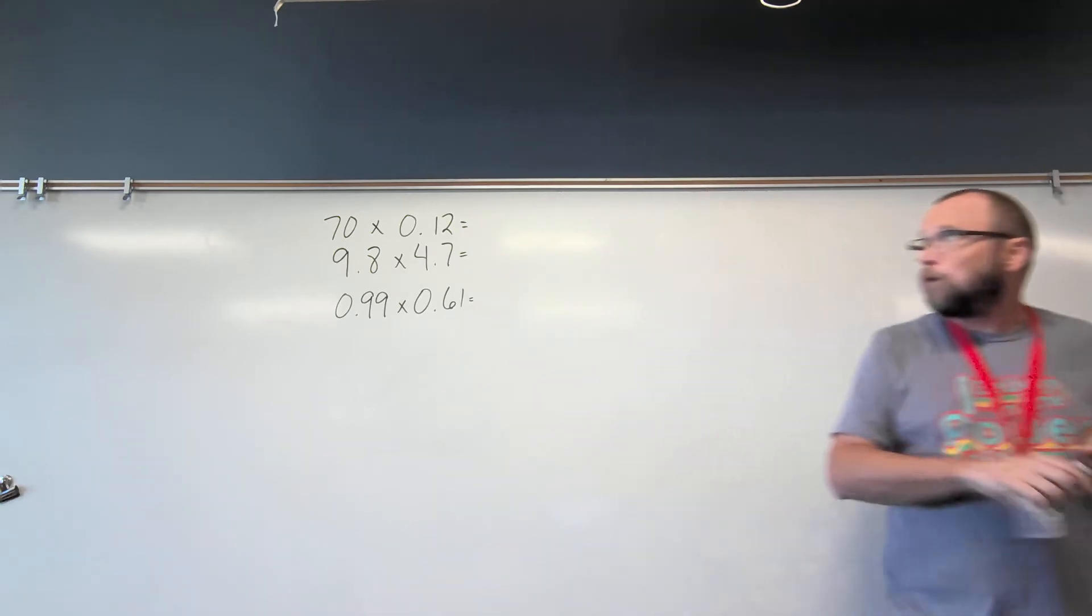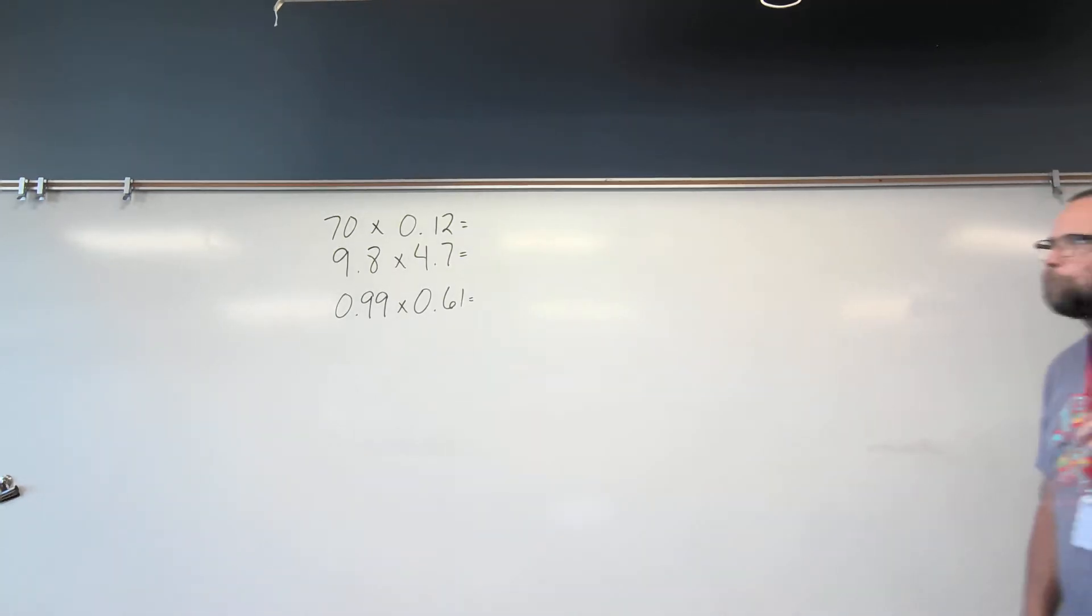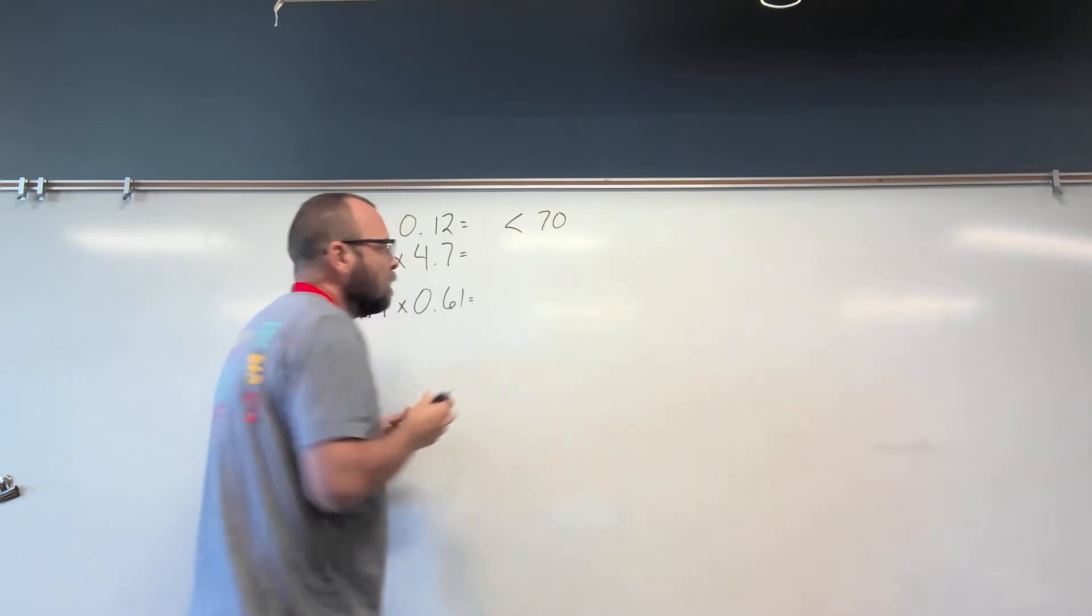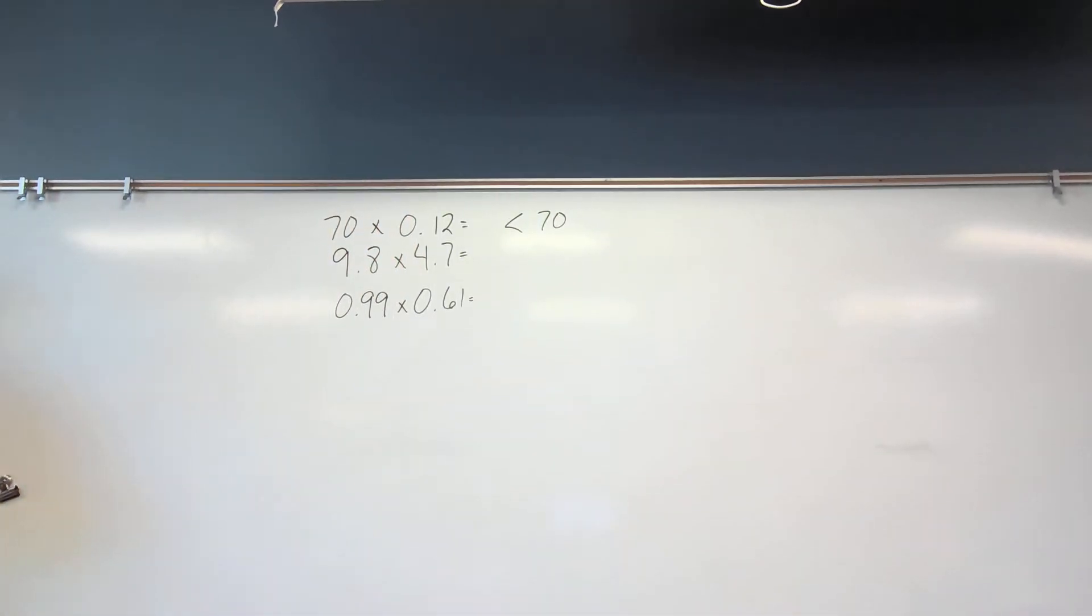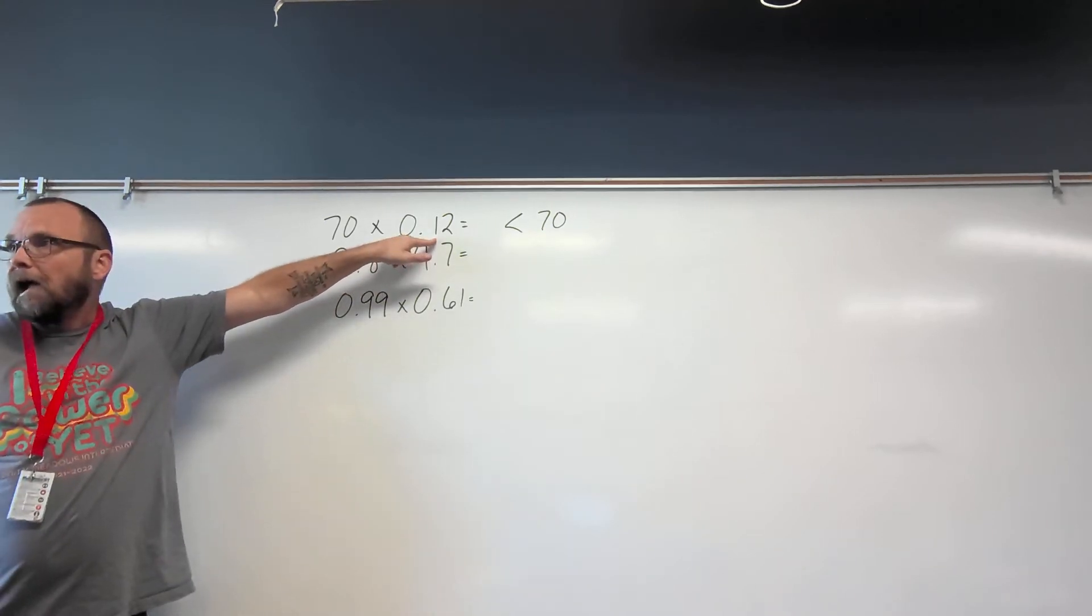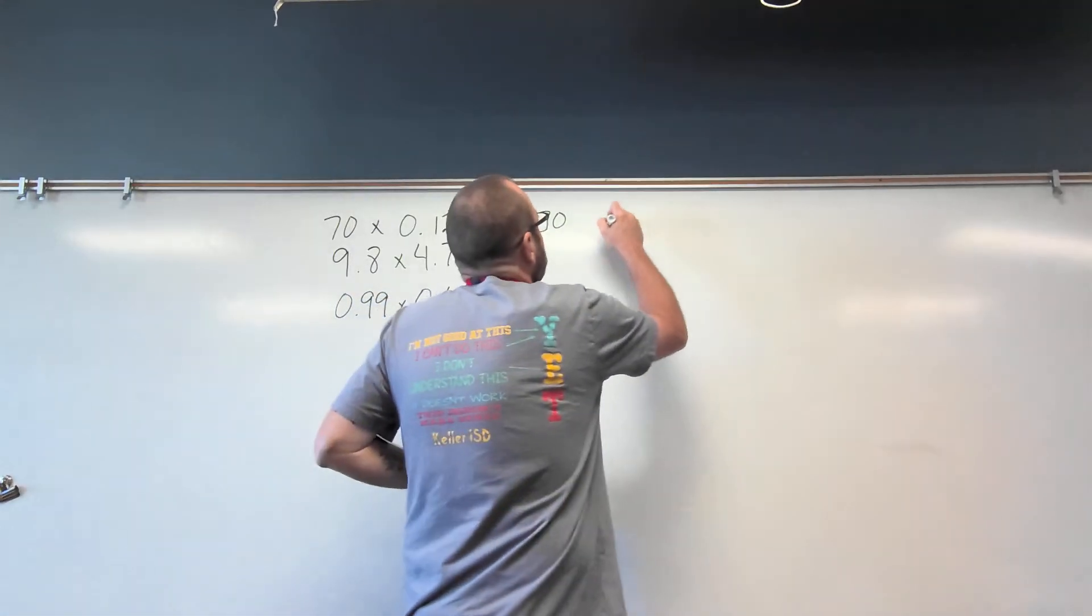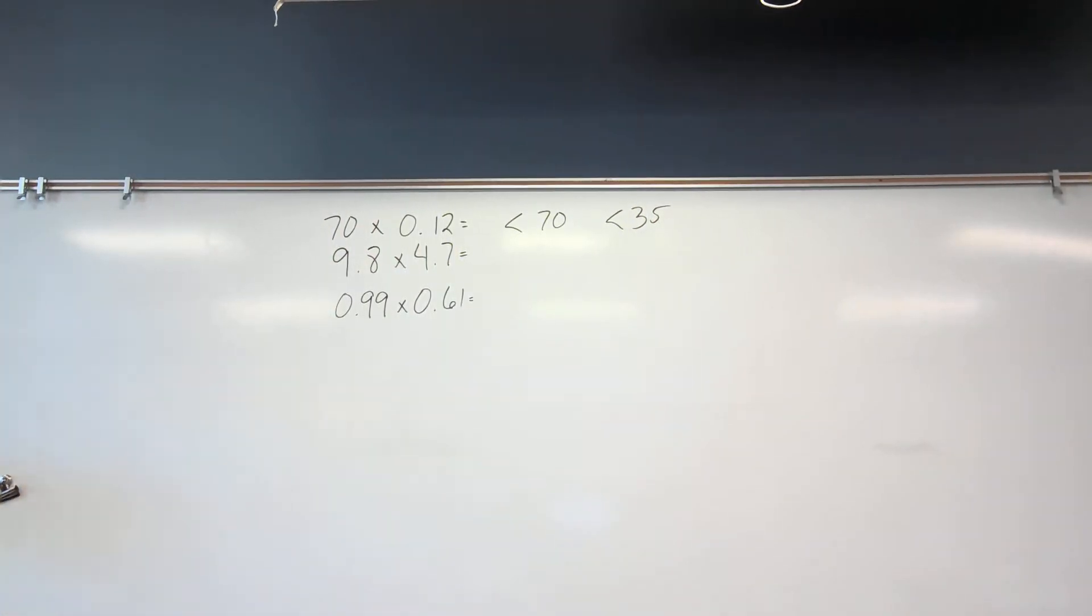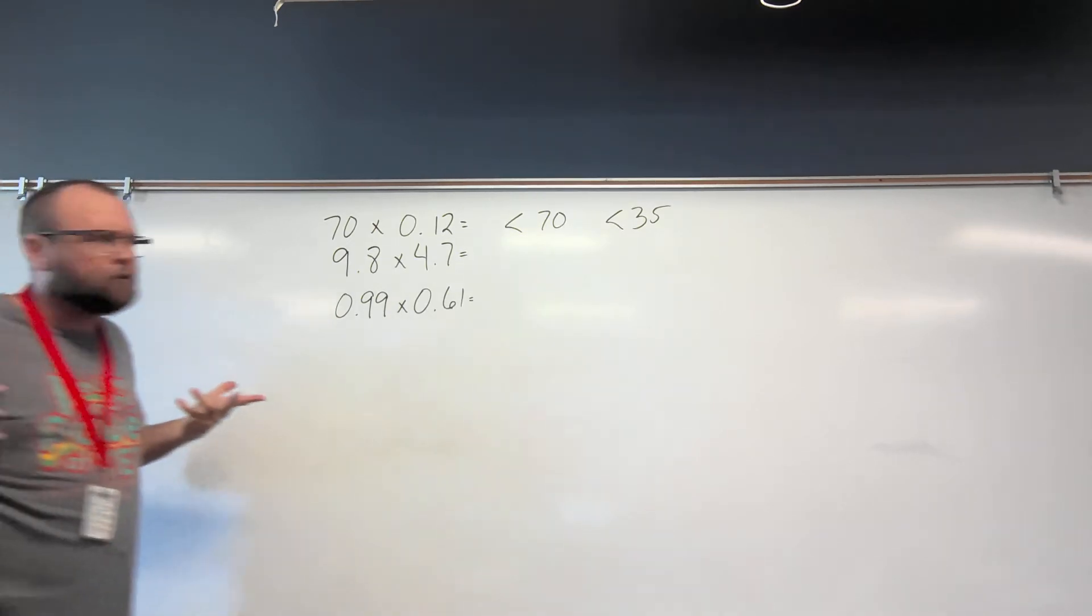Now as we begin our multiplication of decimals, we're going to talk about a few things before we actually do the problem. First thing, I want to look at the first problem, 70 times 12 hundredths. Now is my answer going to be less than or greater than 70? Less. So my answer is going to be less than 70. Is it going to be less than, greater than, or equal to 35? Half of 70 would be 35, right? Am I multiplying by a half, more than a half, or less than a half? Less than a half. So I know my answer is going to be less than 35. Now that's a pretty good estimate. It helps me figure out where I'm going to put my decimal point. So it's always important to do that.